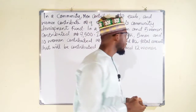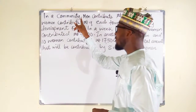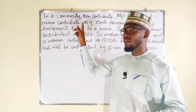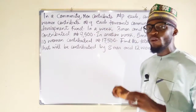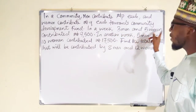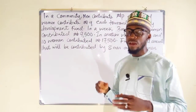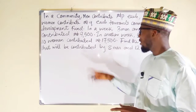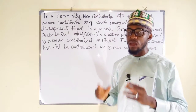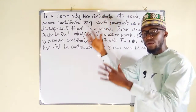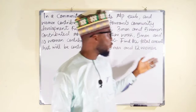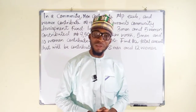Now let us read the question. In a community, men contribute P naira each and women contribute Q naira each towards a community development fund. In a week, three men and five women contributed the sum of nine thousand five hundred naira. In another week, five men and ten women contributed the sum of seventeen thousand five hundred naira.